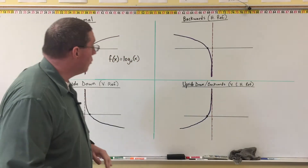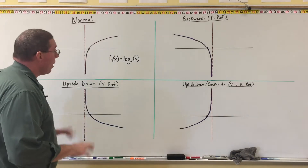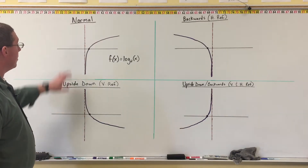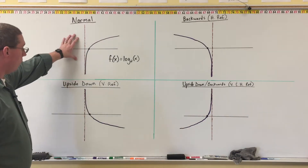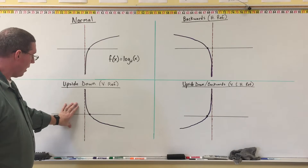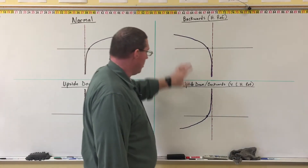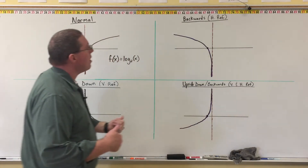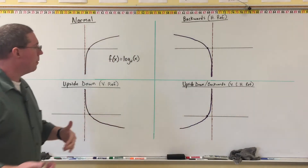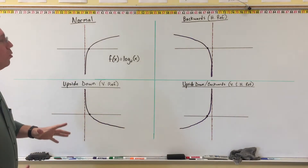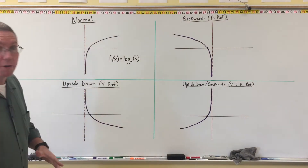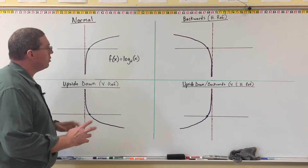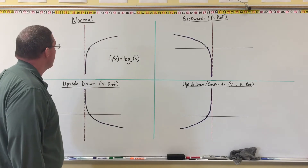Well, if you want to, why don't you look at what I put here. I did the exact same thing — here's the normal graph, here's upside down, here's backwards, and here's upside down and backwards. And we'll see if you might be able to figure this out on your own, even though I'm still going to explain it to you. But just look at it for a second.